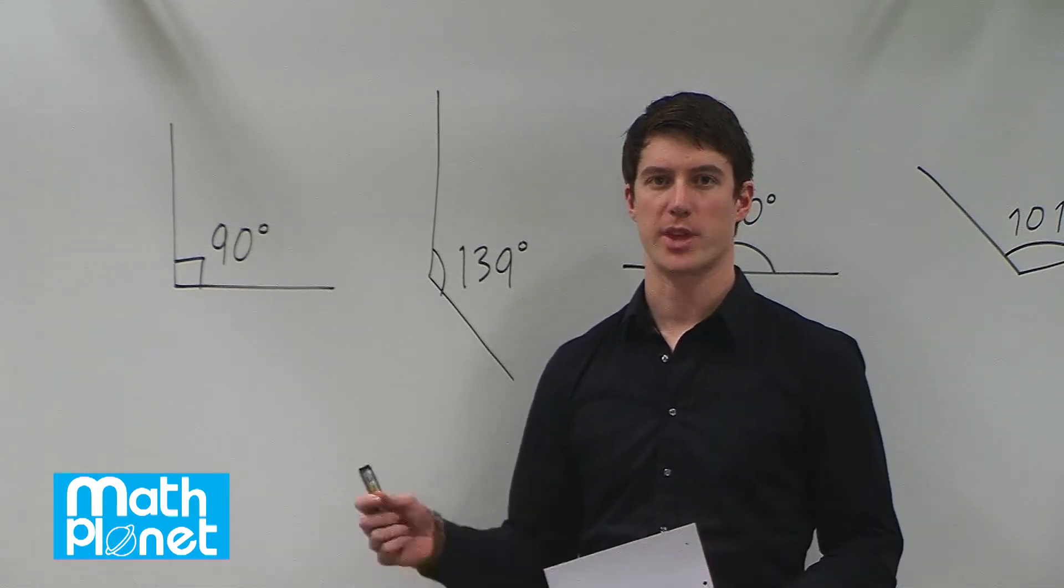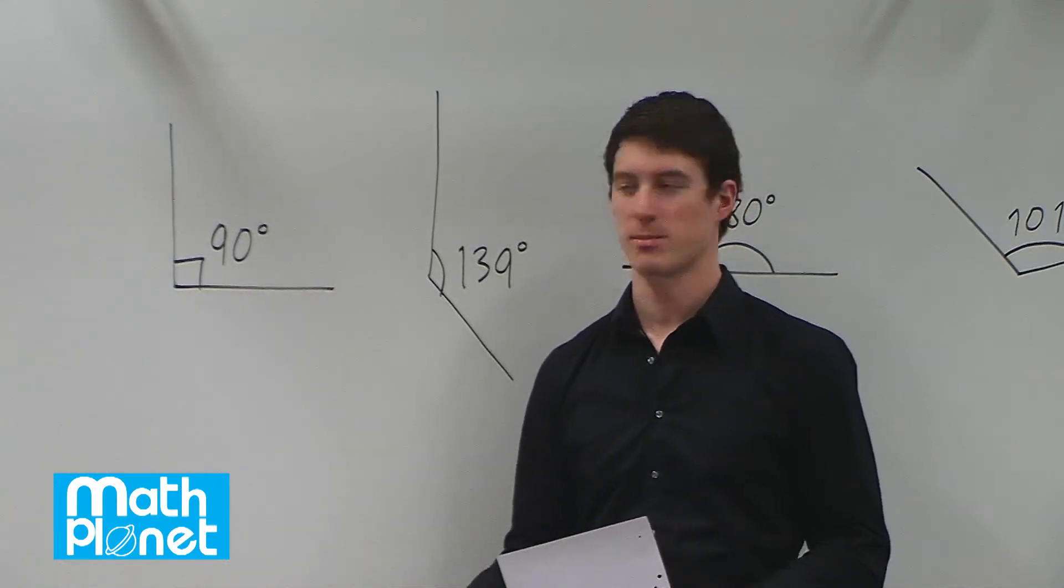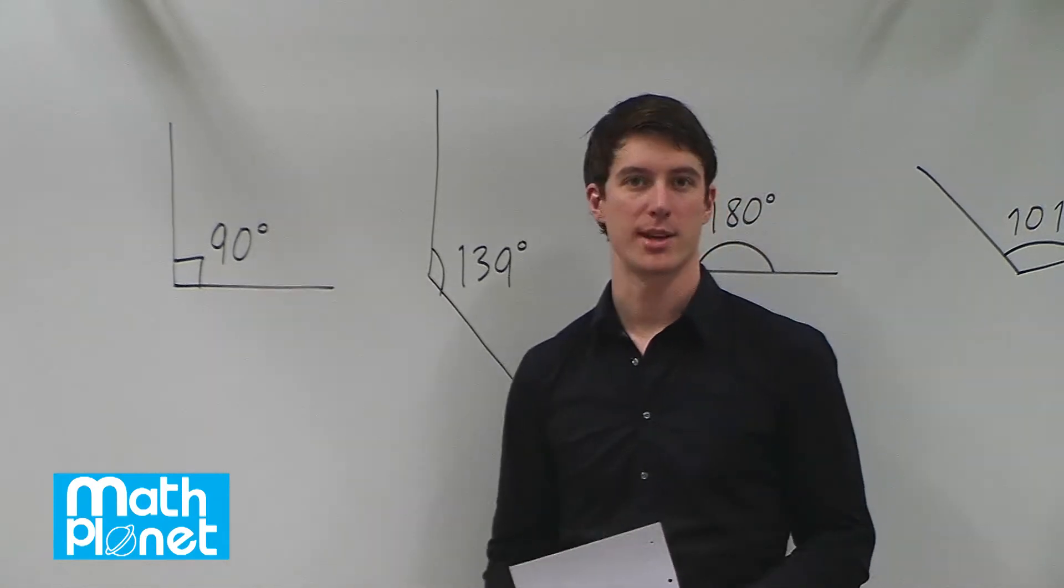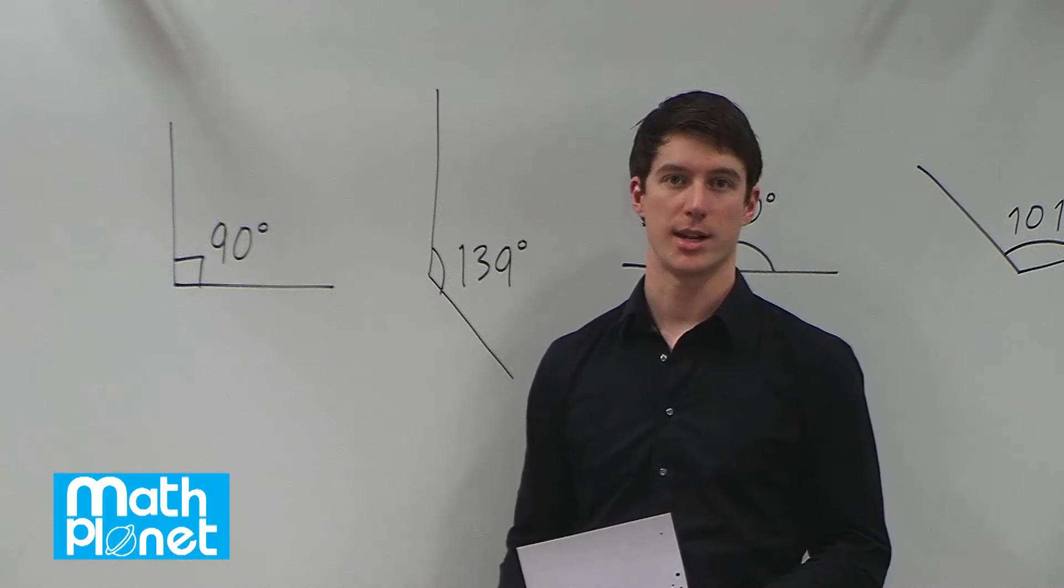So if the angle is obtuse, it's greater than 90 degrees. If it's acute, it's less than 90 degrees. 90 degrees is a right angle, and if it's straight, then you could say the angle is 180 degrees.